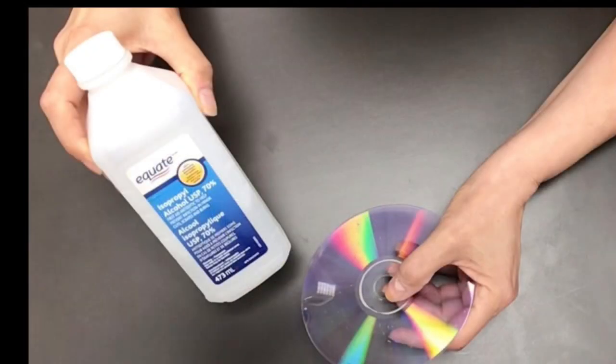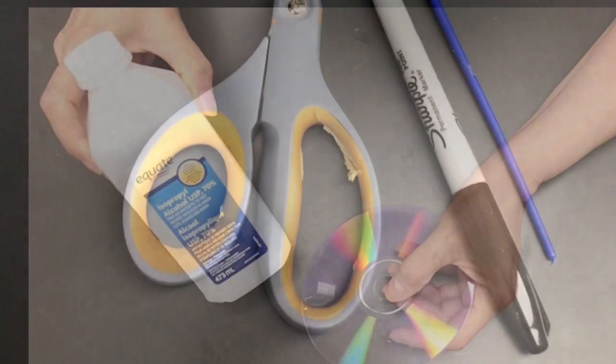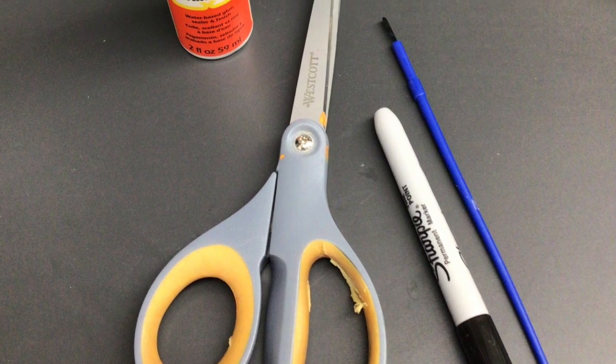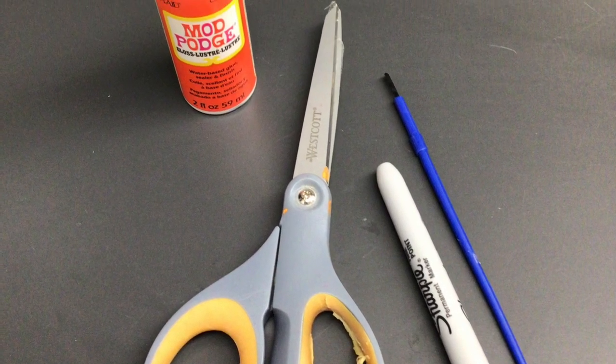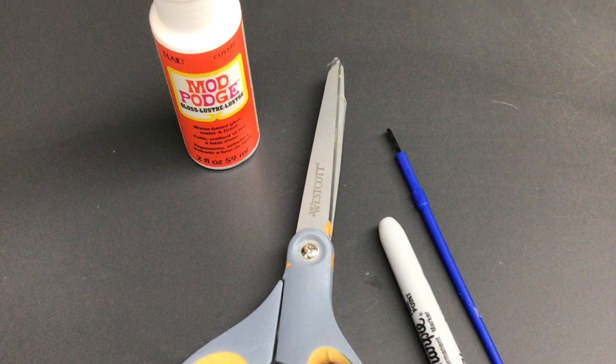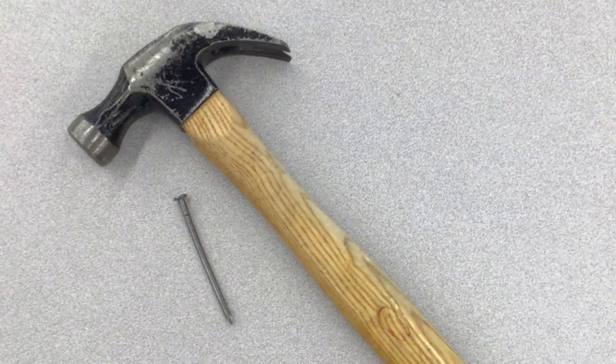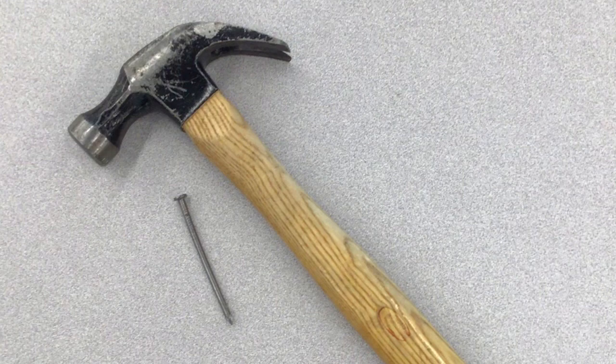At home you will need to gather rubbing alcohol on a cotton swab, scissors, a black marker, a paintbrush, and something you can use as a primer like Mod Podge or clear nail polish. A hammer and a nail to place a hole in the suncatcher.